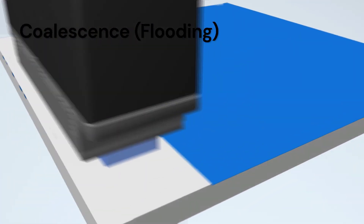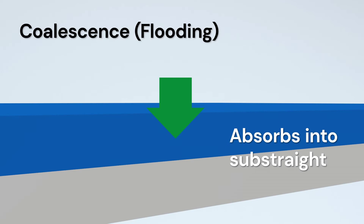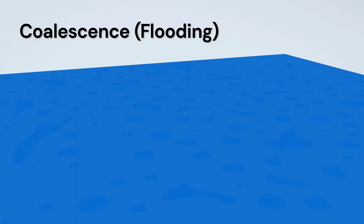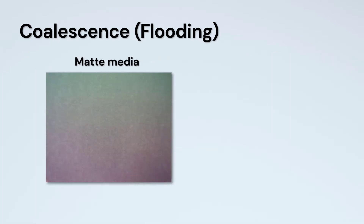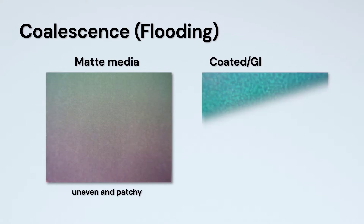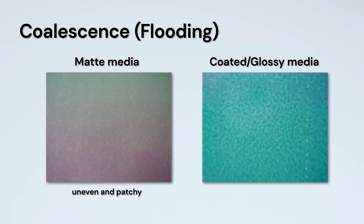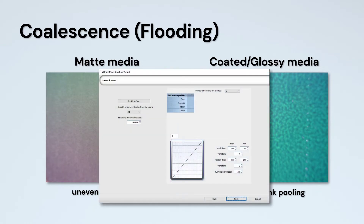Coalescence or flooding occurs when the ink coverage is greater than can be absorbed by the substrate, but can look different depending on media. On a matte media, coalescence will cause the print to look uneven and patchy, while a coated glossy media can look grainy and will show ink pooling in certain areas due to the media reaching its saturation point. These issues can be corrected by adjusting the levels of ink used in the printing process in print mode creation.